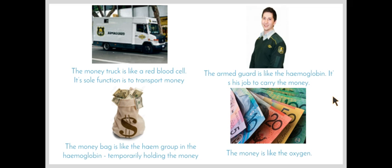The money bag is like the heme group in the hemoglobin. The heme group is a particular part of the hemoglobin which holds on to its own little bit of oxygen. And the money in our analogy is like the oxygen. So the main job of our hemoglobin is to help get oxygen from our lungs to all the cells in our body.